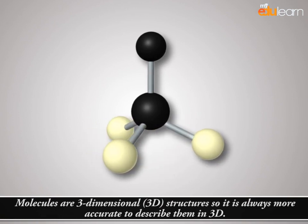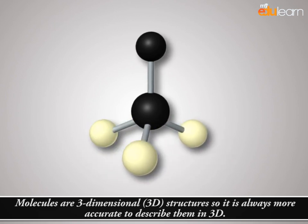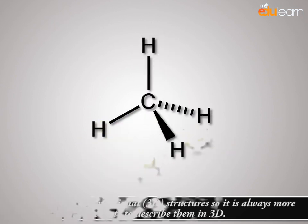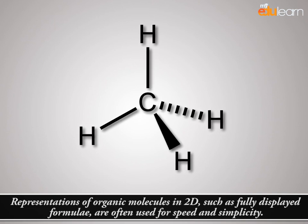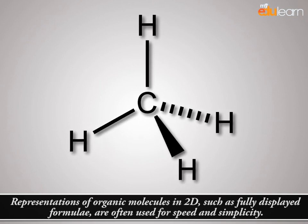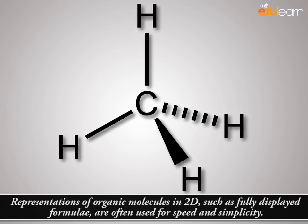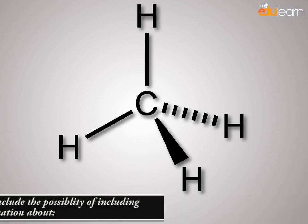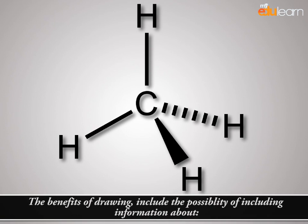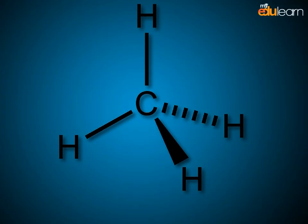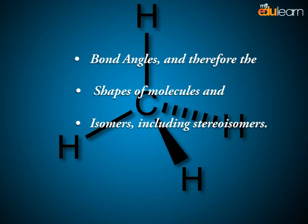Molecules are three-dimensional, so it is always more accurate to describe them in 3D. Representations of organic molecules in 2D, such as fully displayed formulae, are often used for speed and simplicity. The benefits of drawing include the possibility of including information about bond angles and, therefore, the shapes of molecules and isomers, including stereoisomers.